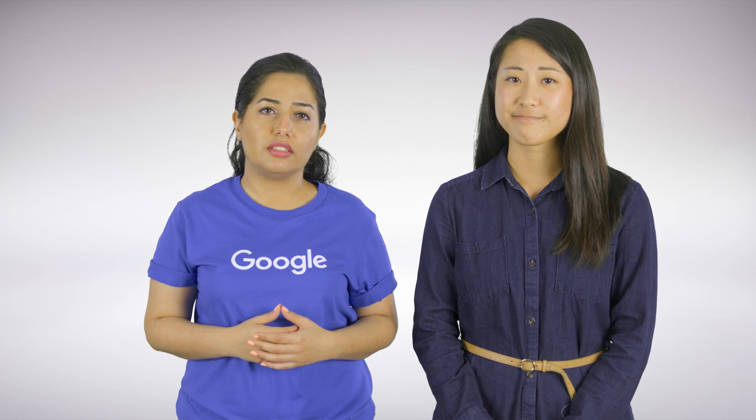What you don't want to be worrying about in data processing is cost and complexity. Using Spark and Hadoop shouldn't break the bank. So on top of the other GCP resources you use, there's only a small incremental fee payable per virtual CPU in your cluster. Dataproc automation also helps you save money by turning clusters off when you don't need them. With billing in one second clock time increments, subject to a one minute minimum, you also only pay for what you use.